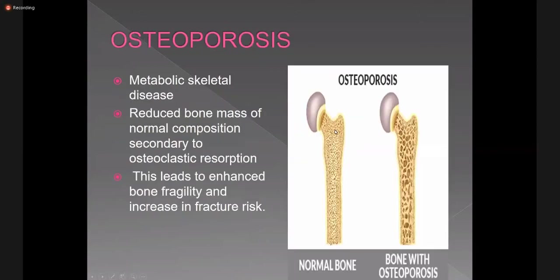Coming to osteoporosis: the osteoid is normal, there is normal mineralization of the osteoid, but there is imbalance of osteoblastic activity and osteoclastic activity. Increased osteoclastic activity leads to porous bone in osteoporosis. It is the most common metabolic skeletal disease and it is a silent disease. Mostly people come to know about osteoporosis when they first get their fracture.